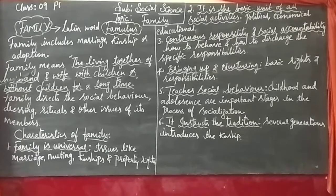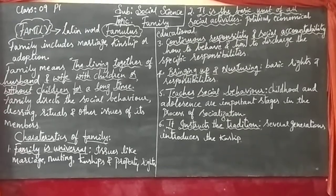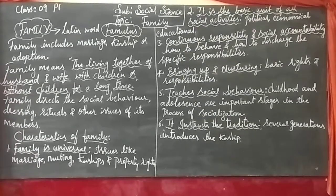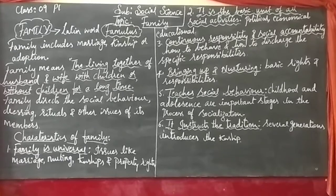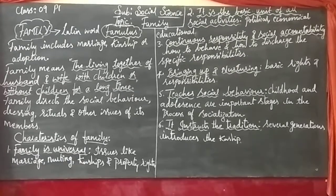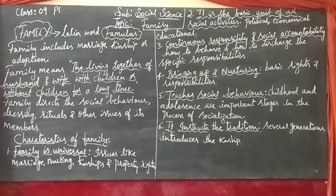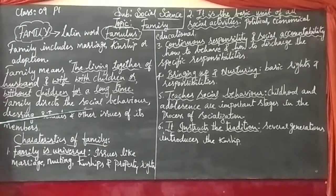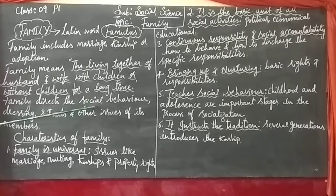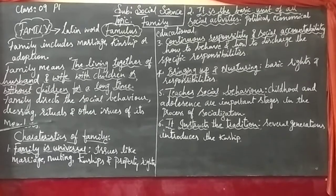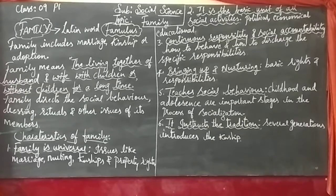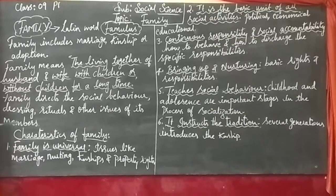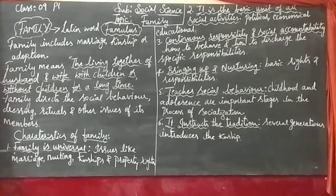Now when we are learning the meaning, man is said to be a social institution. Whatever the family contains — the family directs. You are living in a family. Family directs the social behavior, dressing, rituals, and other issues of its members.